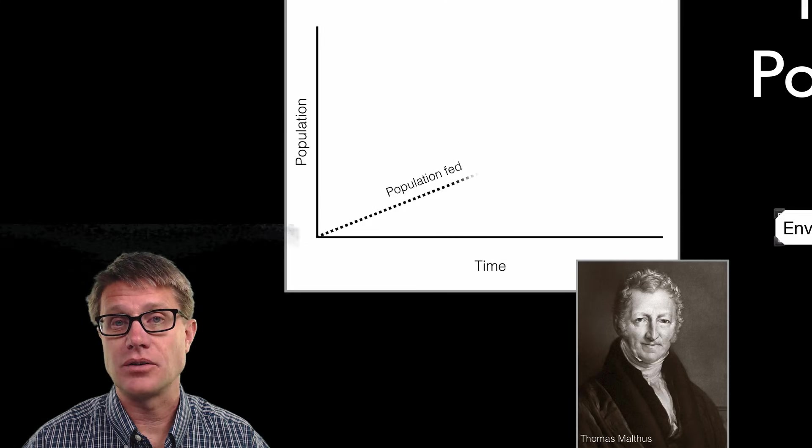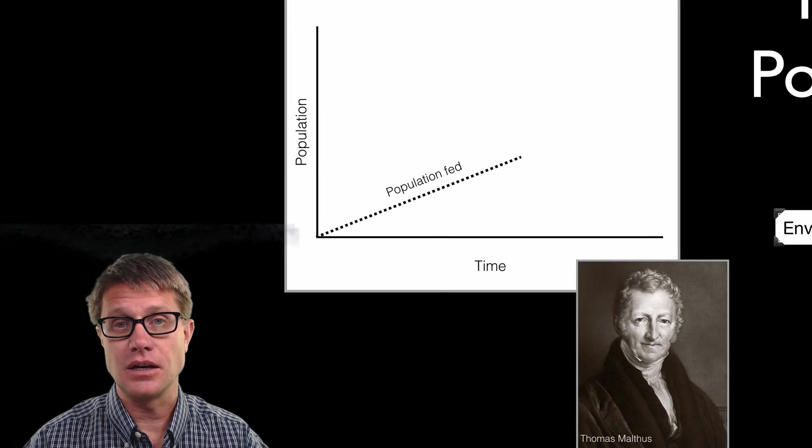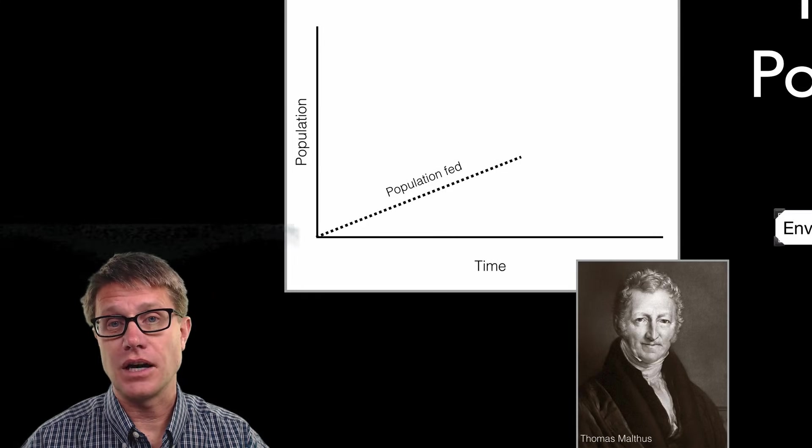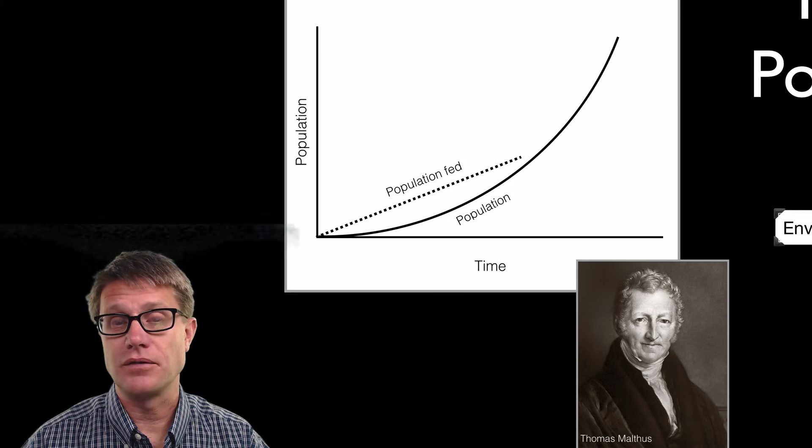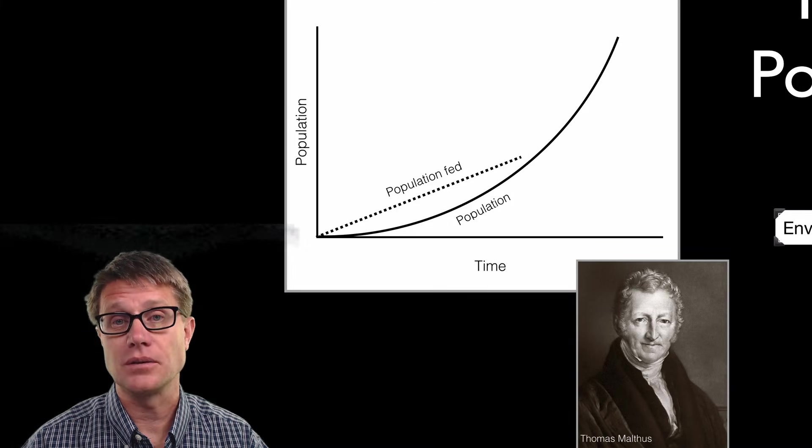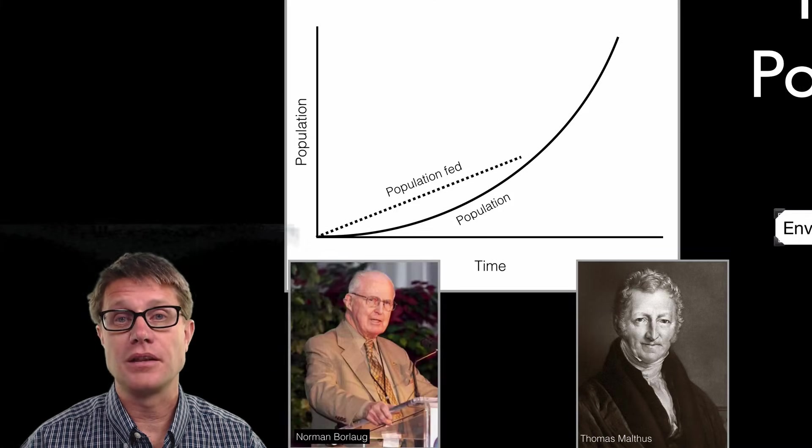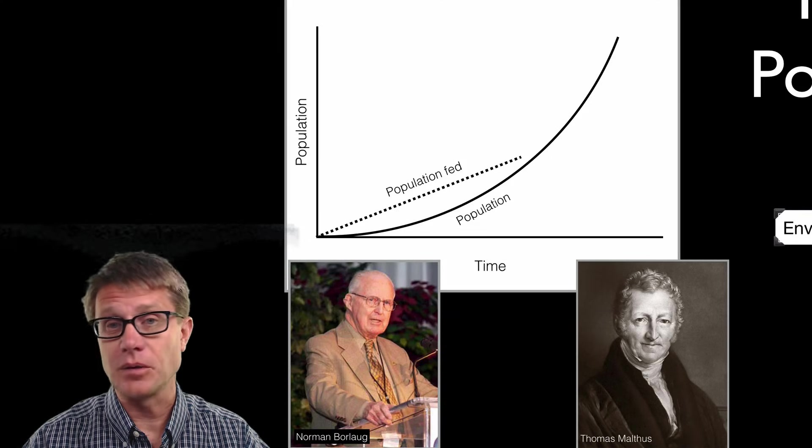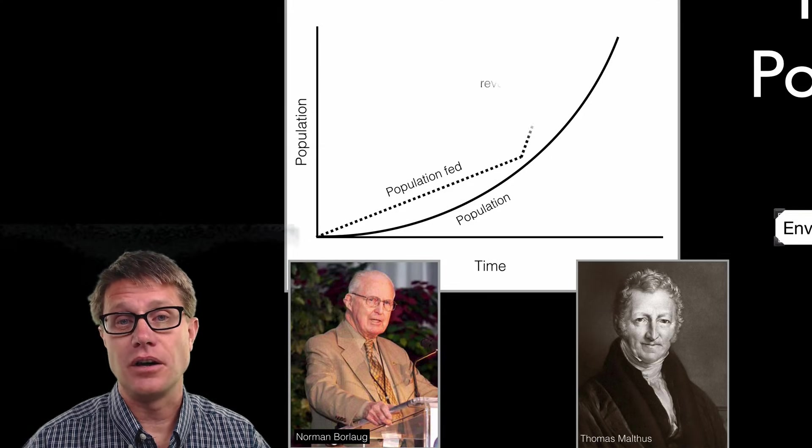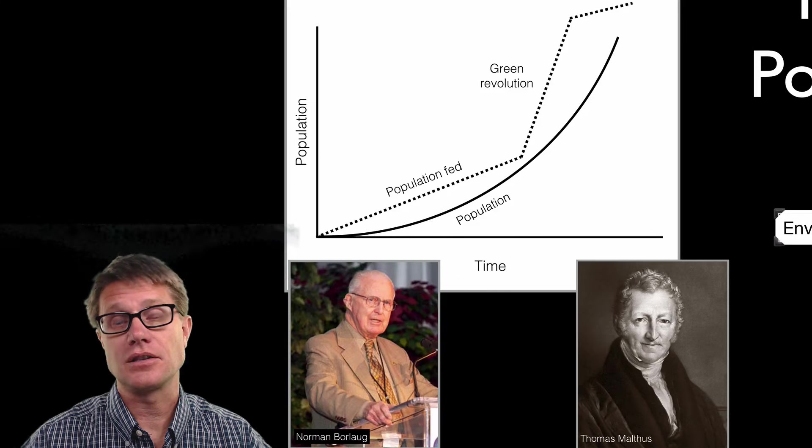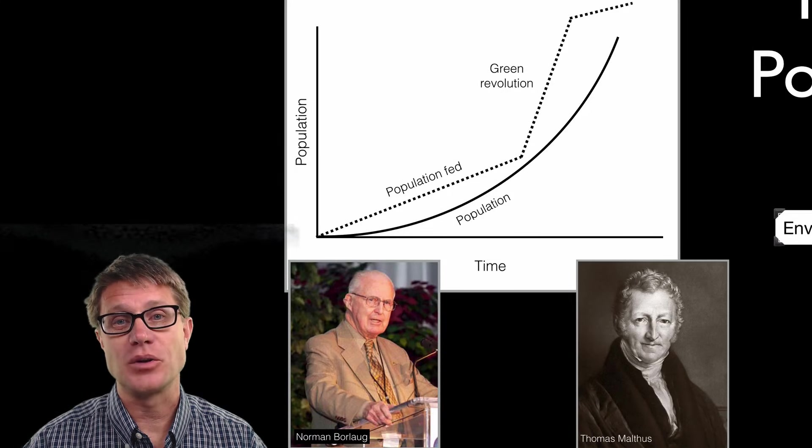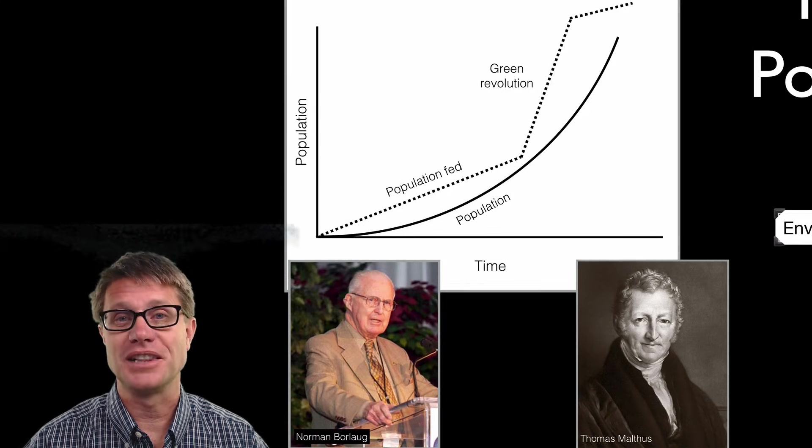Now this happened in the last century. Countries like Mexico and India saw that the food production was not increasing at a rate that could supply food for their growing population. So what did they do? They brought in the biologists. Norman Borlaug came in and brought in new farming practices, new varieties. We called this the green revolution and it solved the problem. It is a pretty nice thing to put on your resume. Saved a billion lives.